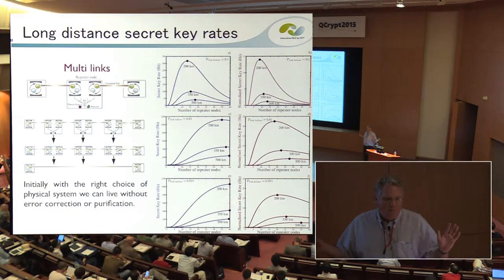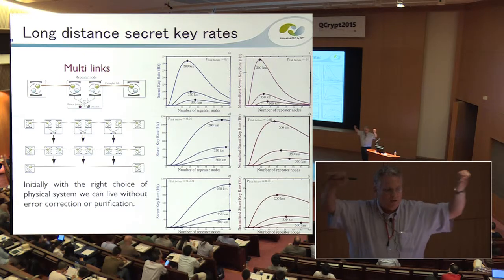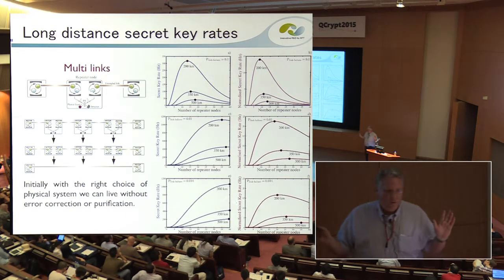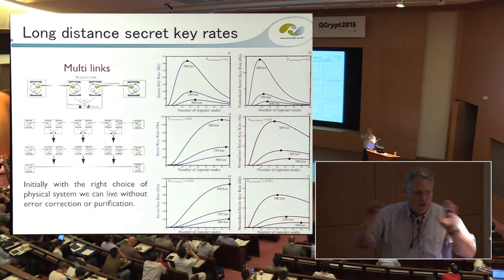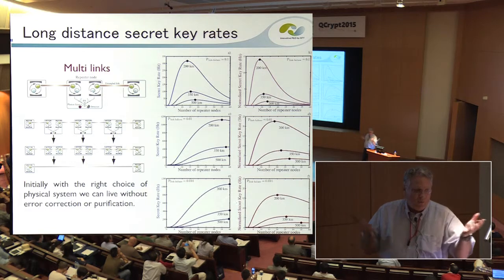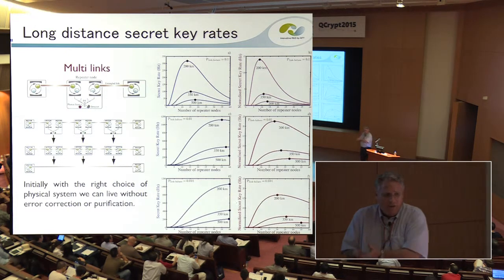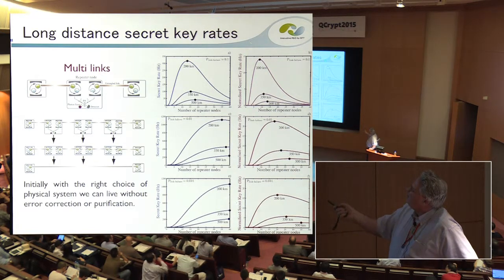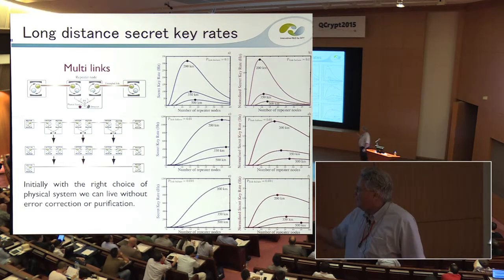For a simple repeater chain — I'll call it a relay, because there's no error correction and no purification — we assume high enough quality entanglement between nodes and just do entanglement swapping. I plot both the raw rate and the normalized rate. My normalization is the total number of NV centers in the entire system divided through. Parts of the repeater community are starting to think about dividing through by total resources. We're not getting bad distances, but these are few-hertz rates.